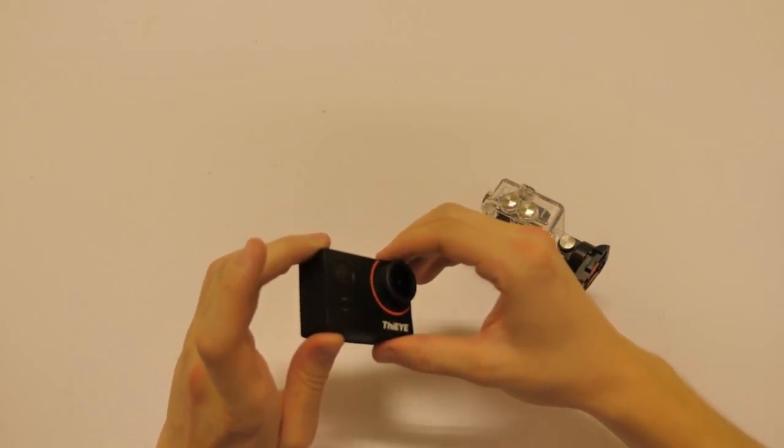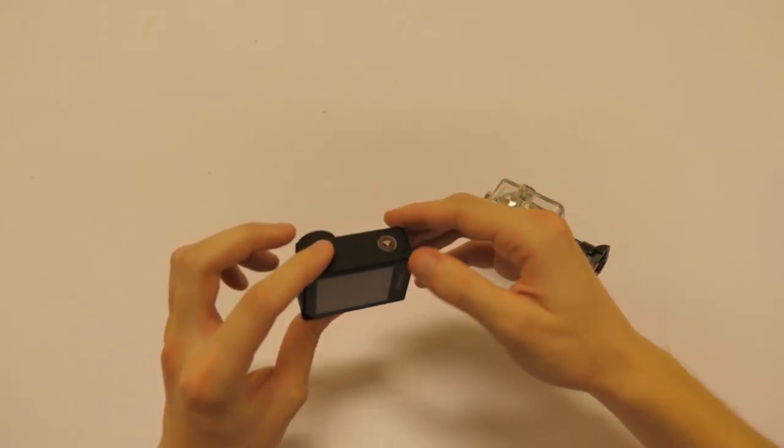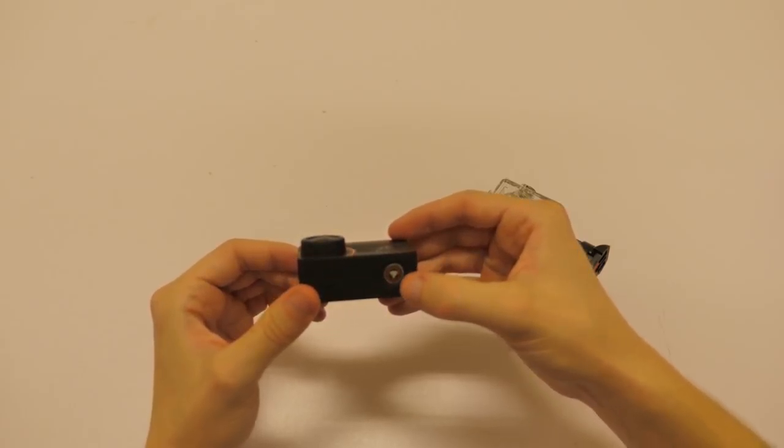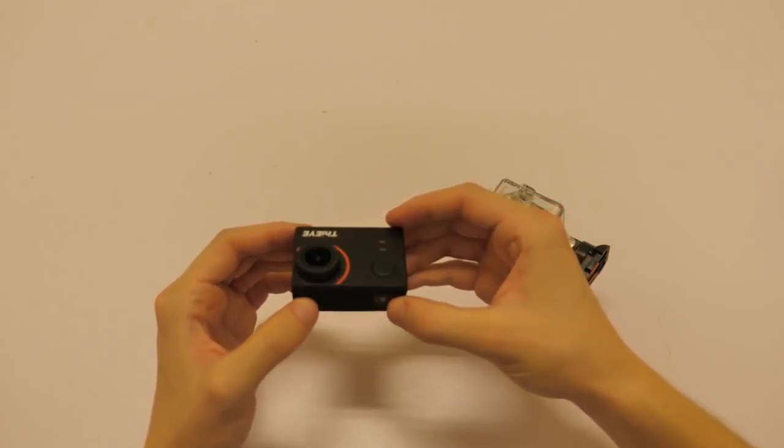Take out the camera from the waterproof casing and let's take a look at how to operate it. This is what the E7 looks like along the front, and then along the back of course we have the screen like that.